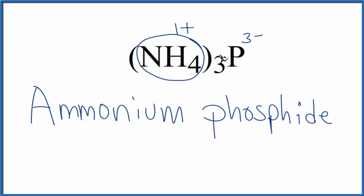We have this 3 minus. Yes, we're going to need 3 of these 1 plus ammonium ions here in order to have the charge balance out to be zero. This is Dr. B with the name for (NH4)3P ammonium phosphide. Thanks for watching.